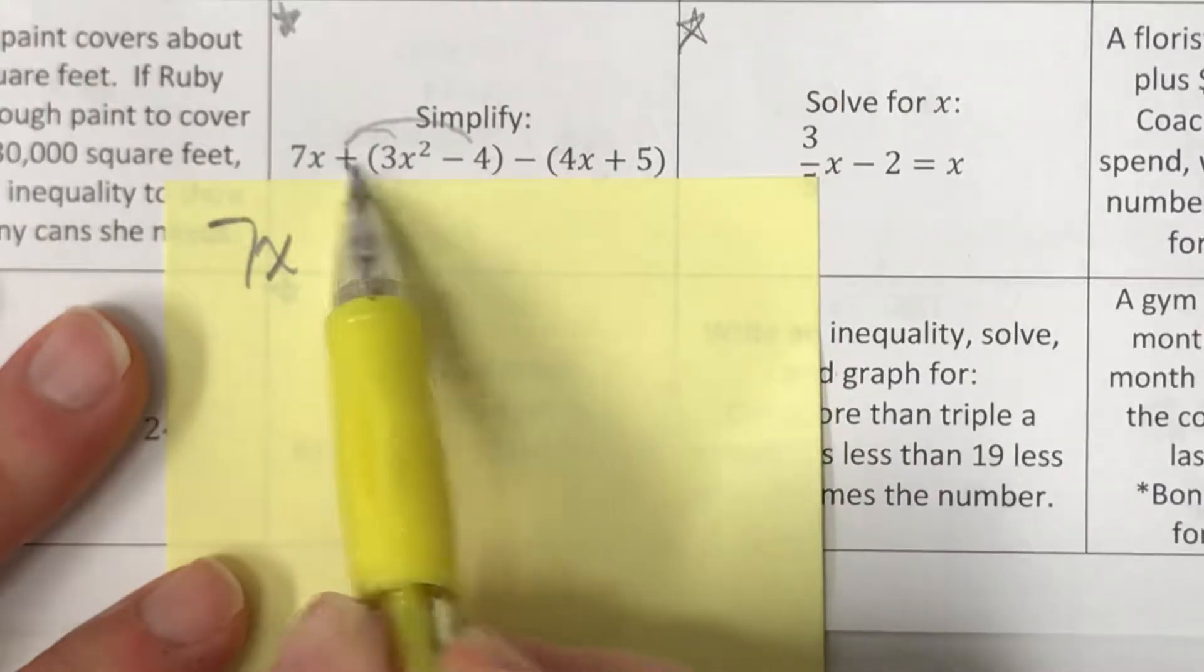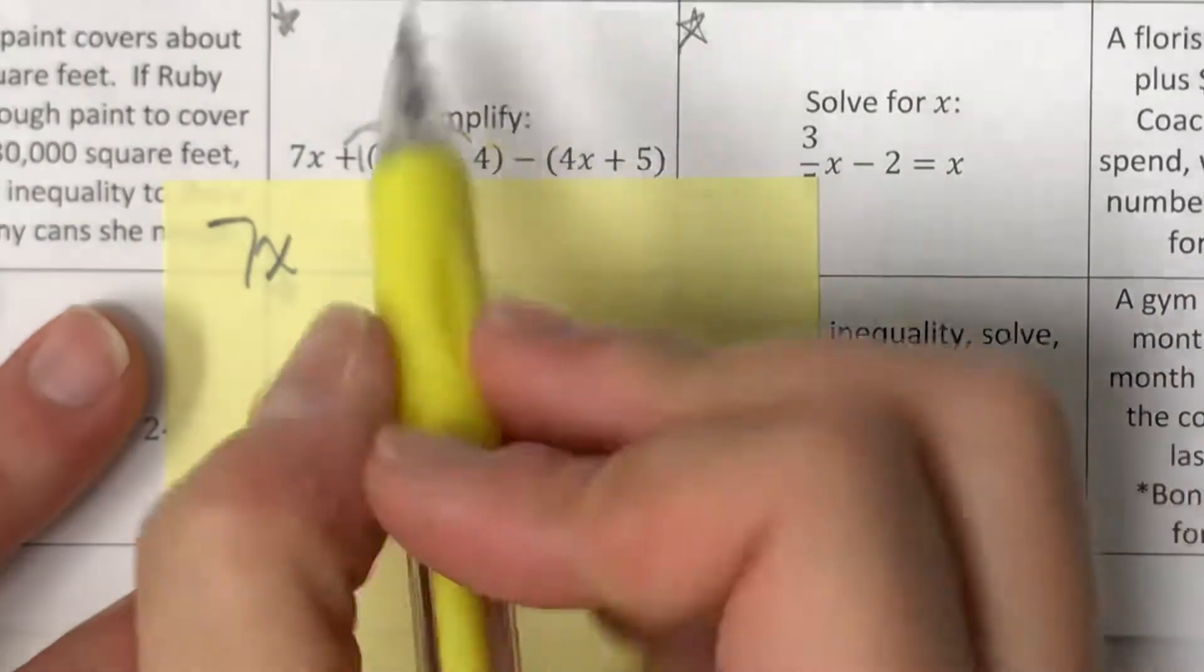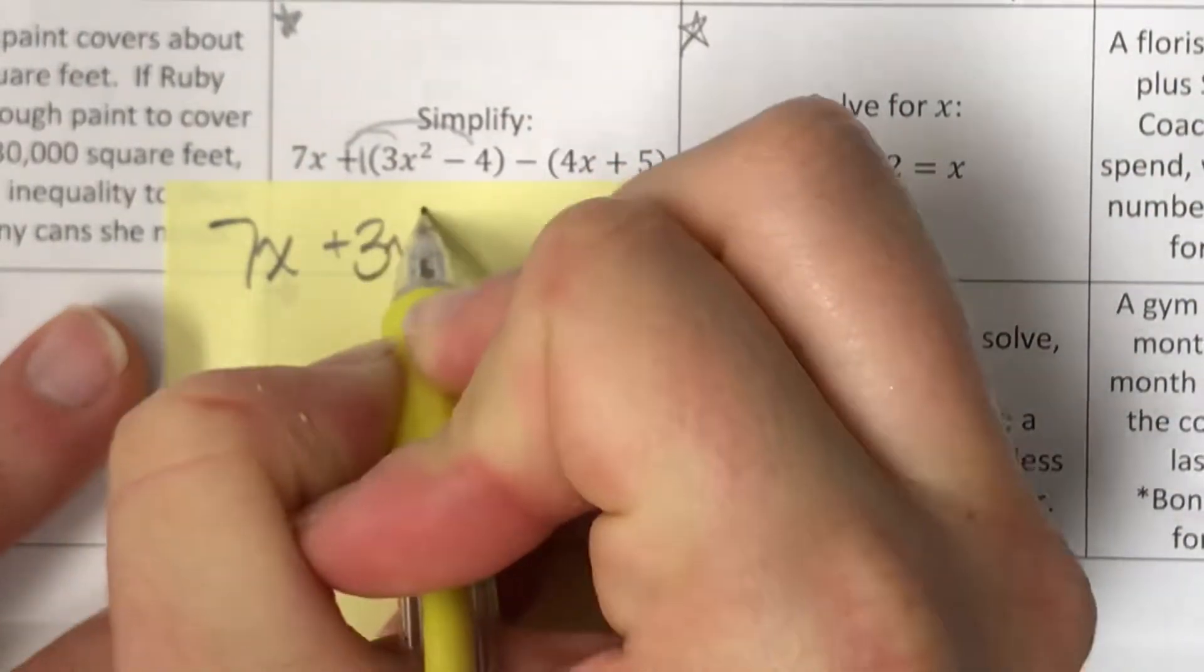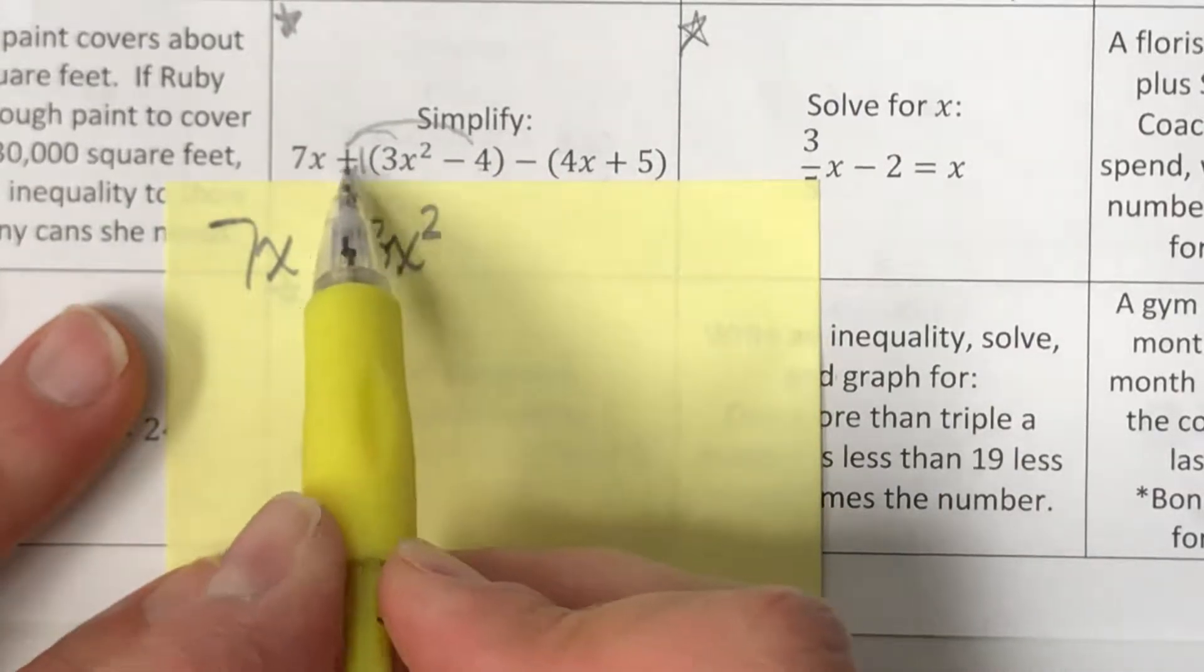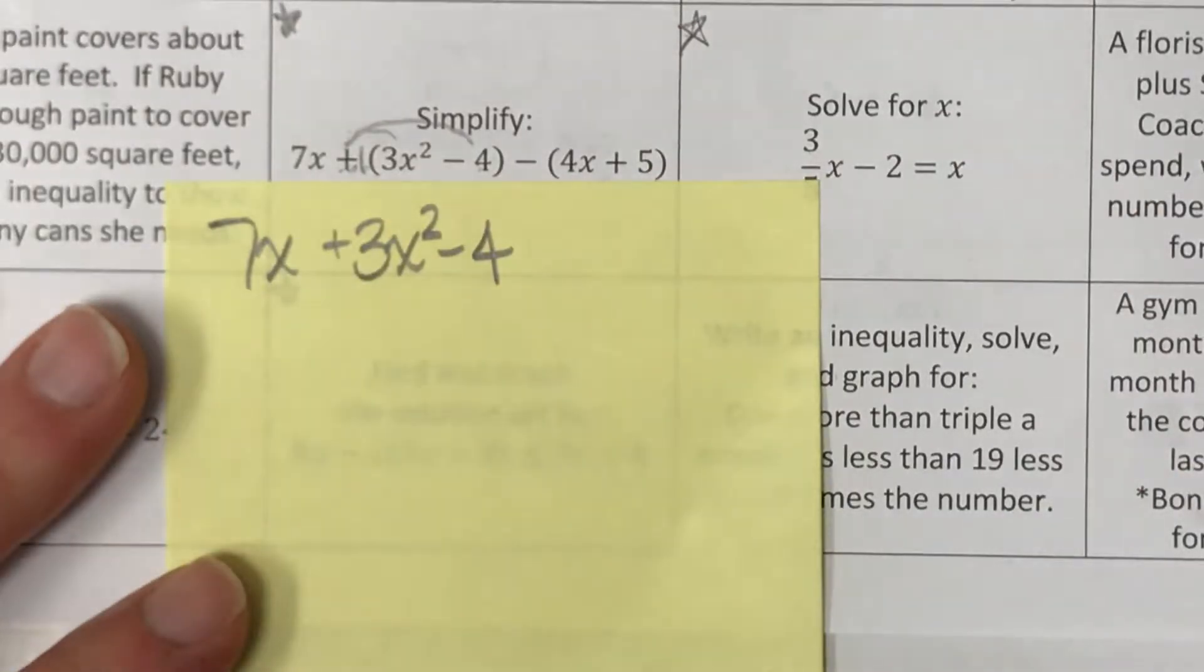A lot of times we can think of it as we're distributing the plus, but really what you're distributing is a positive 1. So positive 1 times 3x squared is not going to change it at all. Positive 1 times negative 4, if I multiply a positive times a negative, it stays a negative and it does not change at all. So distributing a positive doesn't make that become positive.